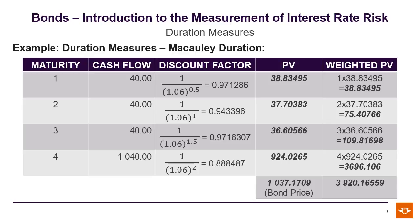I'm going to go through this table, which contains the details of the calculation for the Macaulay duration. Looking at the cash flows, there are four semi-annual cash flows, with the first three being just the 40 Rand coupon, while the fourth cash flow includes the 1,000 Rand par value, giving a total of 1,040 Rand. We discount them at 6%: the first payment is discounted for half a year, the second for a year, the third for a year and a half, and the fourth for two years. Calculating the present values and adding them together gives us a price of 1,037 Rand and 17 cents. Taking the weighted present values, we get a total of 3,920 Rand and 16 cents.